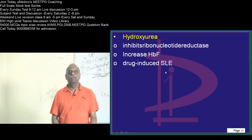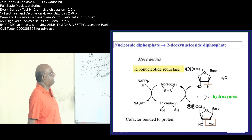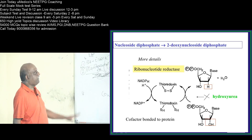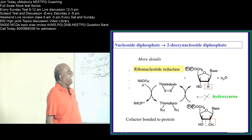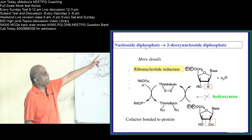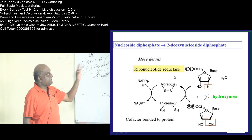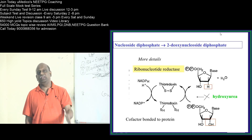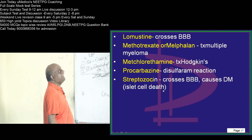Hydroxyurea is one of the important implicated agents in drug-induced anemia. Whenever you use hydroxyurea, you have ribonucleotide reductase. The ribonucleotide reductase is the one which converts nucleoside diphosphate into deoxynucleotide diphosphate, and it is this ribonucleoside reductase that is inhibited by hydroxyurea. If you can recall this in tomorrow's exam, you will crack that one mark — it is one of the favorite and repeatedly asked topics.